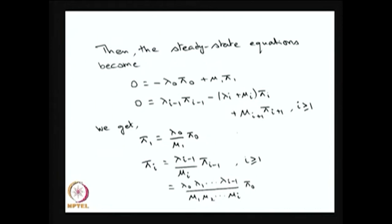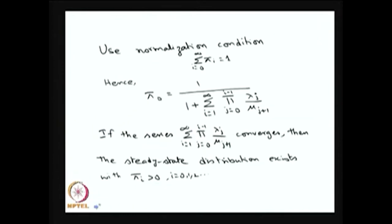From this homogeneous equation one can recursively obtain the pi_i's in terms of pi_0. From the first equation pi_1 is obtained in terms of pi_0; from the second equation pi_2 is obtained in terms of pi_1, and hence in terms of pi_0. Recursively, pi_i's can be obtained in terms of pi_0 for all i ≥ 1. Applying the normalizing condition — summation of pi_i equals 1 — pi_0 is found as 1 divided by the sum of those product-form terms.